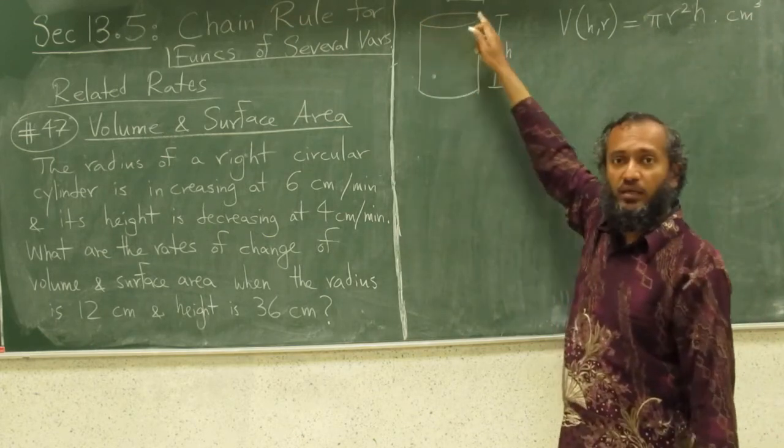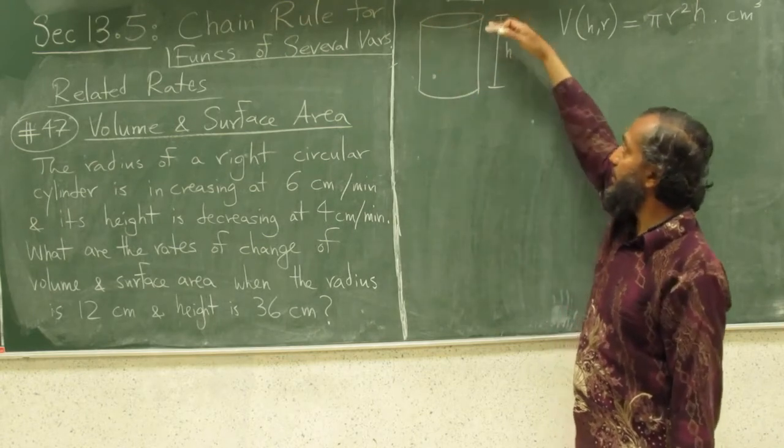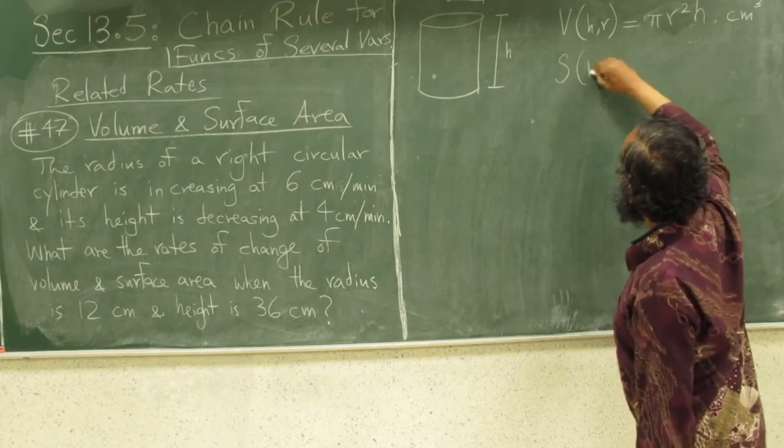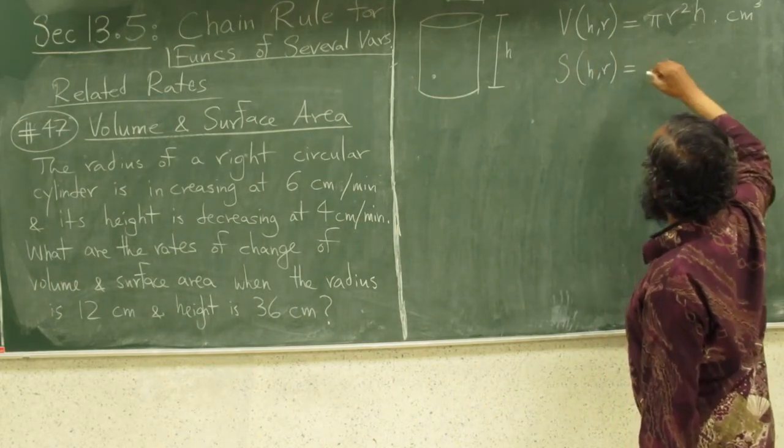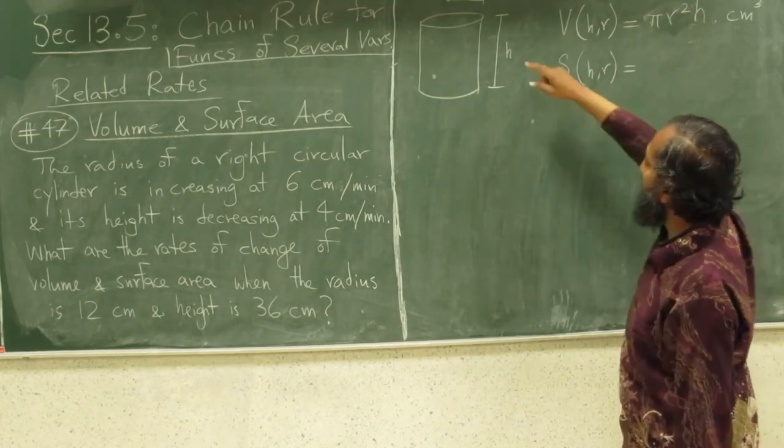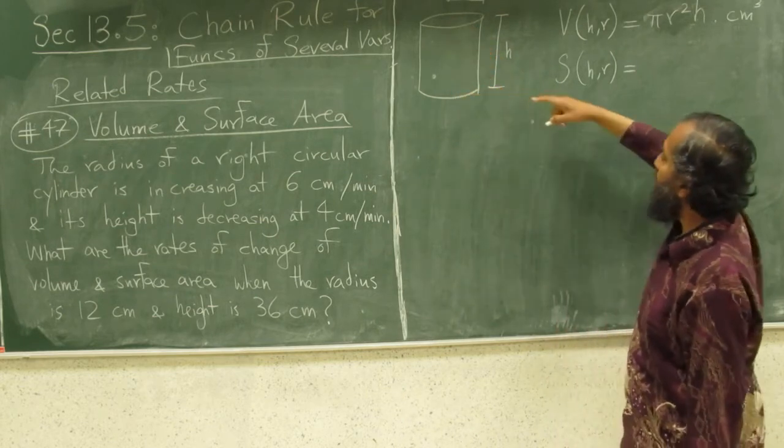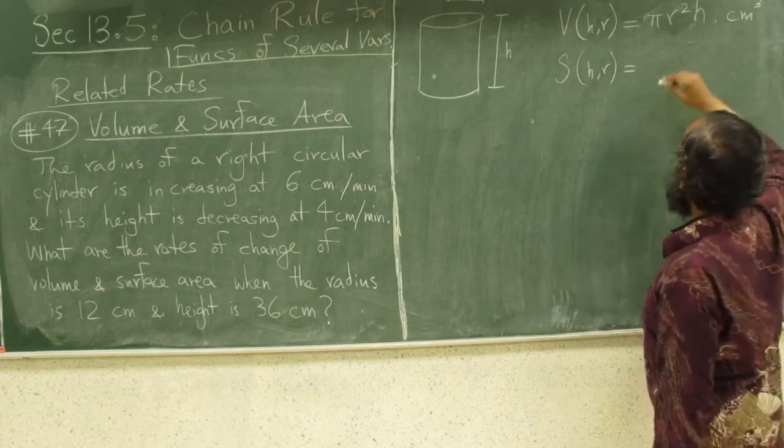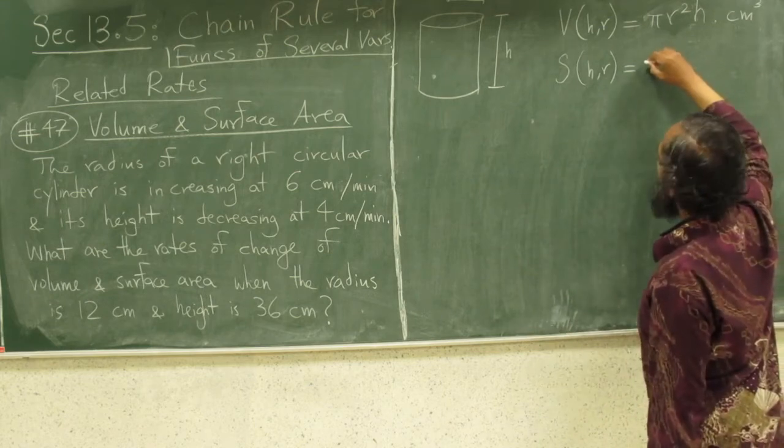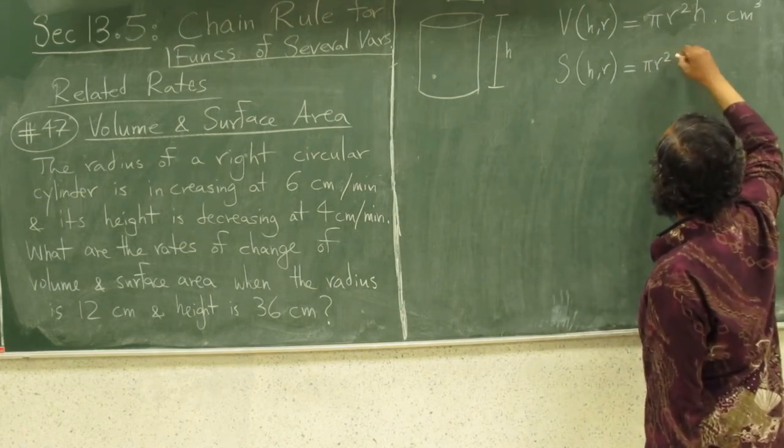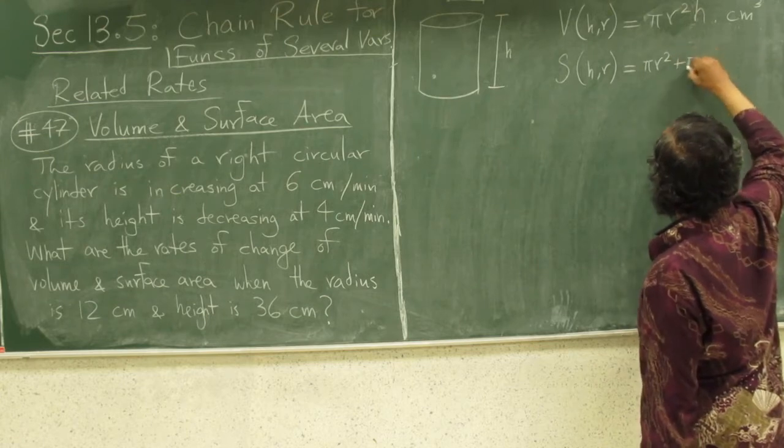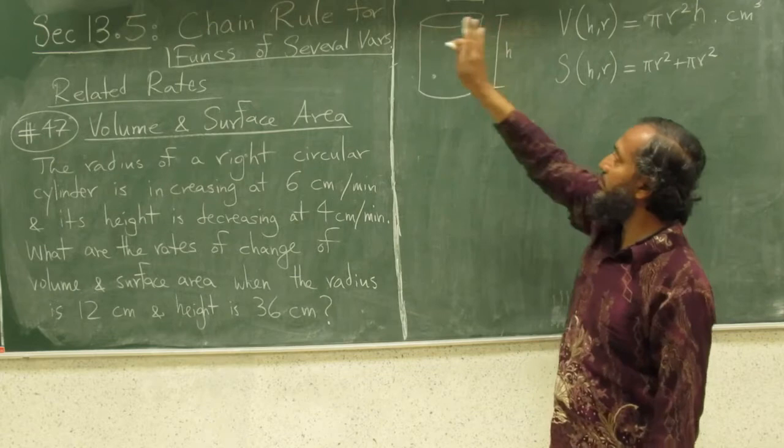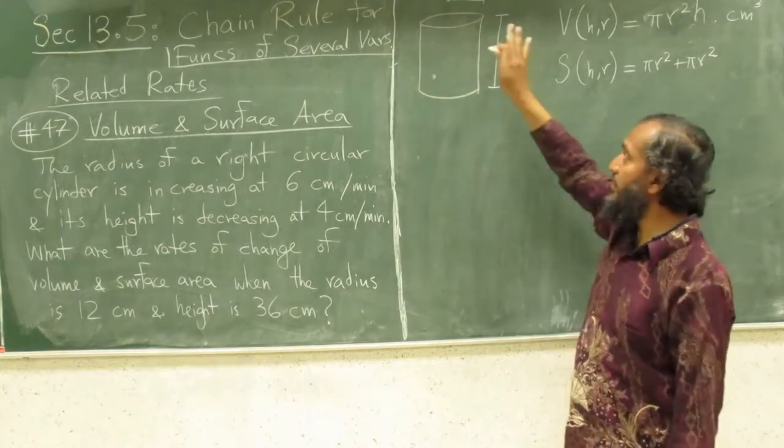Pi r squared is the area of the face of cylinder times the height is the total volume. Surface area as a function of h and r: the surface area of the top and bottom circular faces is pi r squared plus another pi r squared for the bottom, and the surface area of this cylindrical skin.